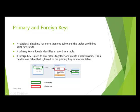A foreign key is used to link tables together and create a relationship. It is a field in one table that is linked to the primary key in another table. In this example, artist ID becomes a foreign key in one table, genre ID becomes a foreign key in another table, and album ID is a primary key in its table.